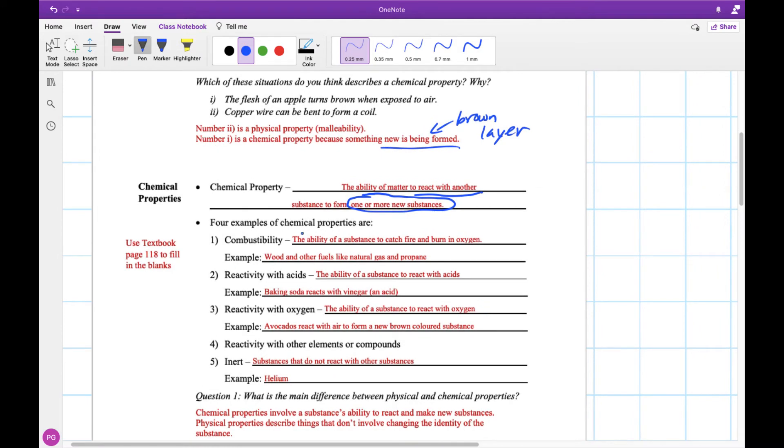Some common examples of chemical properties. There's ones down here and you can look at page 118 to help fill in the blanks. Combustibility is the ability for something to catch fire and burn when exposed to oxygen. Wood, natural gas, propane, basically anything that's flammable needs to have oxygen to burn and this is a chemical reaction. This would be a chemical property if something can burn. For instance, wood can burn, but stone and other types of metal maybe don't burn so easily.